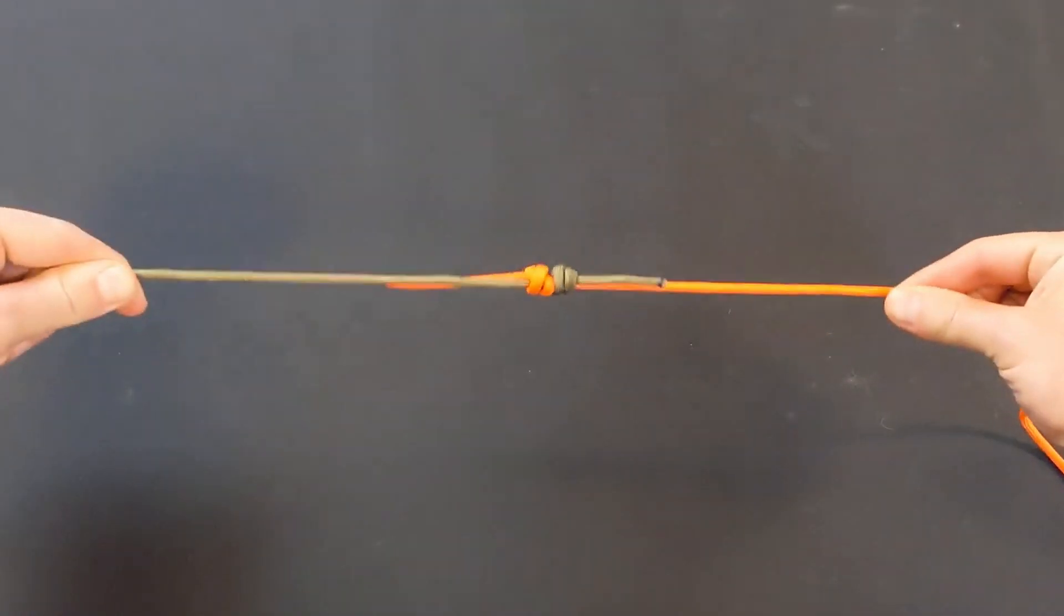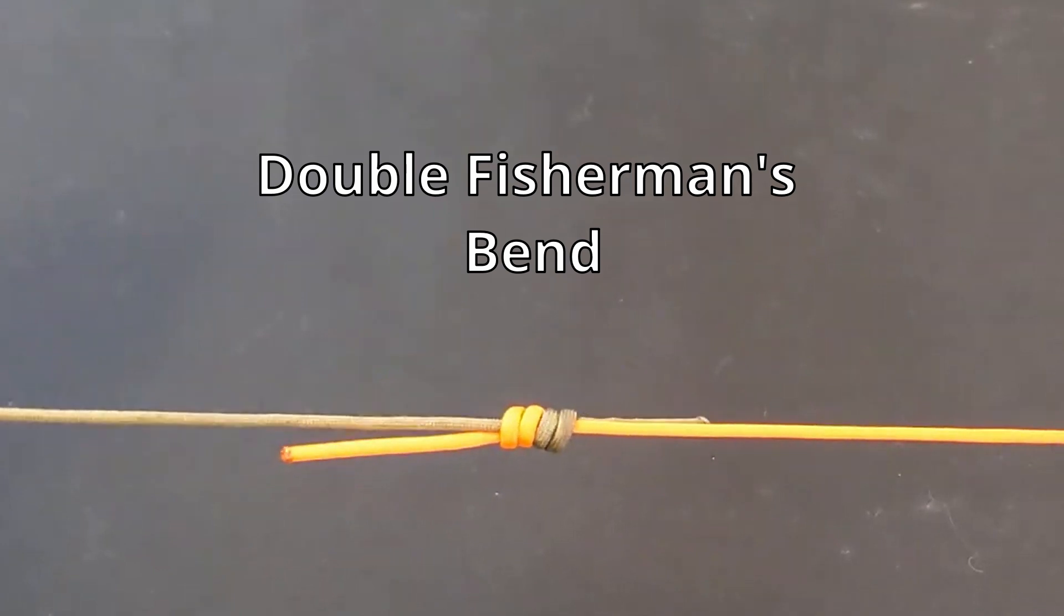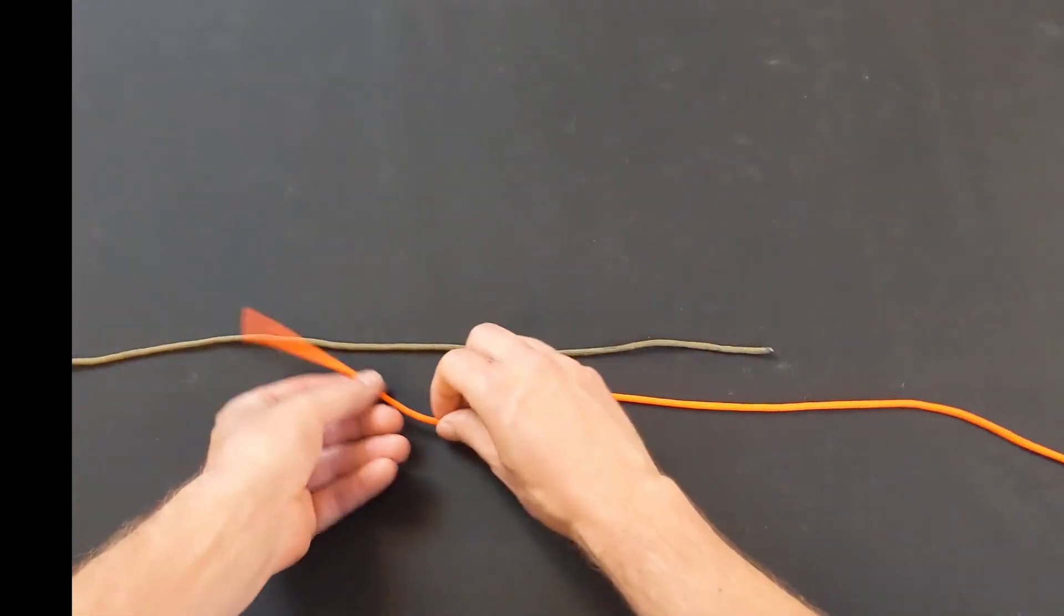If you need more security than a regular Fisherman's Bend, try the double Fisherman's Bend. Overlap the two lines parallel to one another.